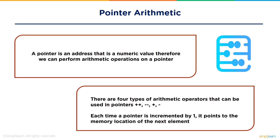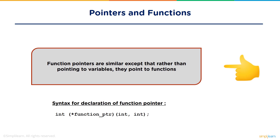Each time a pointer is incremented by one, it points to the memory location of the next element. But if the pointer is an integer pointer, its value on ptr++ would increment by 4 bytes because of the size of the int data type. For example, assume an integer pointer with a current value of 10 — after increment, its value would be 14, not 11, because int is 4 bytes.